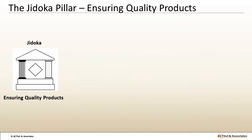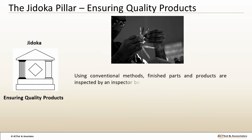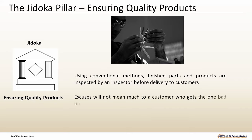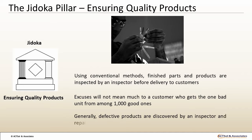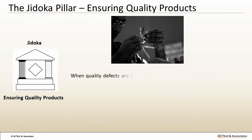Ensuring quality products through Jidoka. Using conventional methods, finished parts and products are inspected by an inspector before delivery to customers. However, defect-free parts cannot be assured if finished goods are sampled by inspectors. Excuses will not mean much to a customer who gets the one bad unit from among 1,000 good ones. Generally, defective products are discovered by an inspector and repaired before they make it to the customer. When quality defects are detected in the process, we must determine the root cause.